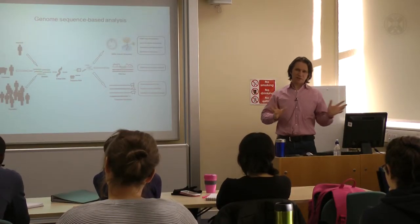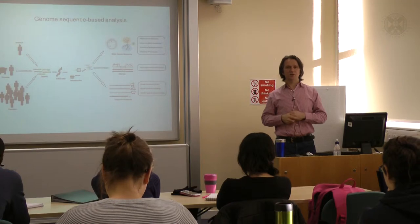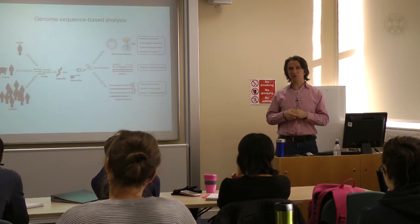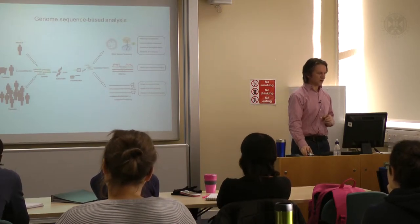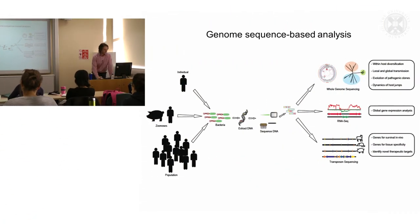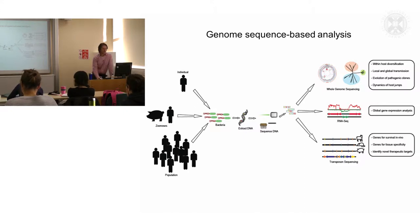All of that work was based on MLST or an extended MLST sampling strategy, and we're now routinely using whole genome sequencing, which allows us to get at various aspects of the epidemiology of infectious disease. We can readily now extract genomic DNA, sequence it, and use it for whole genome sequencing to look at within-host diversification, transmission, evolution of pathogenic clones, and the dynamics of these host jump events.